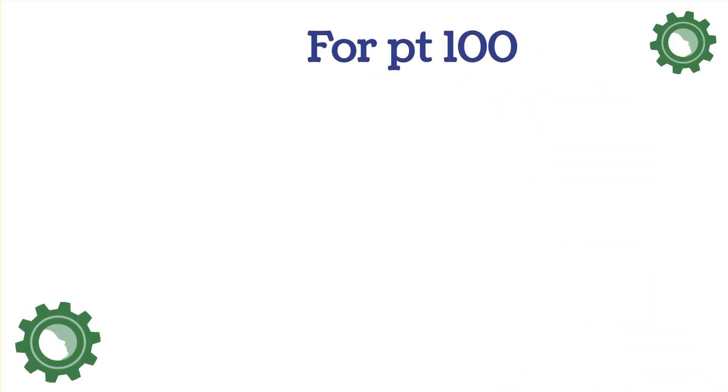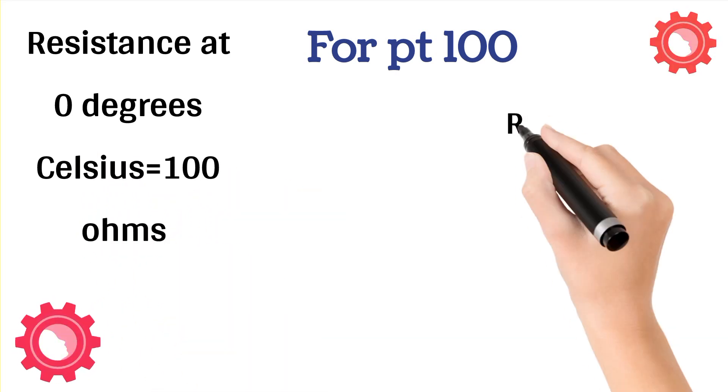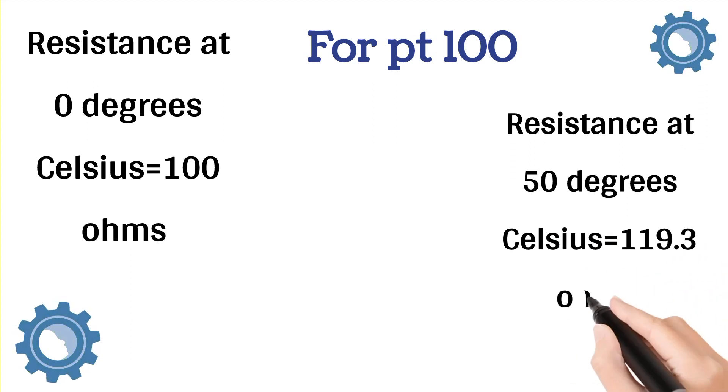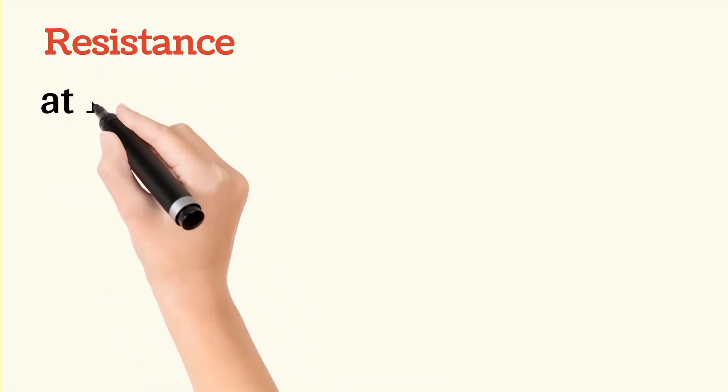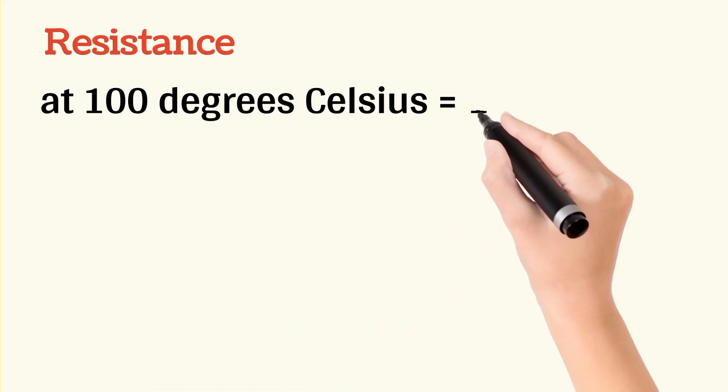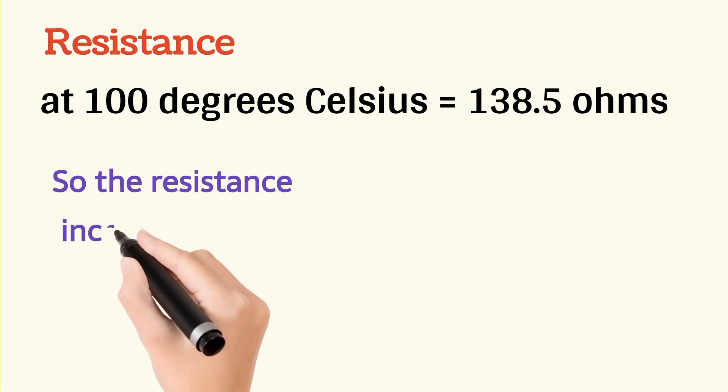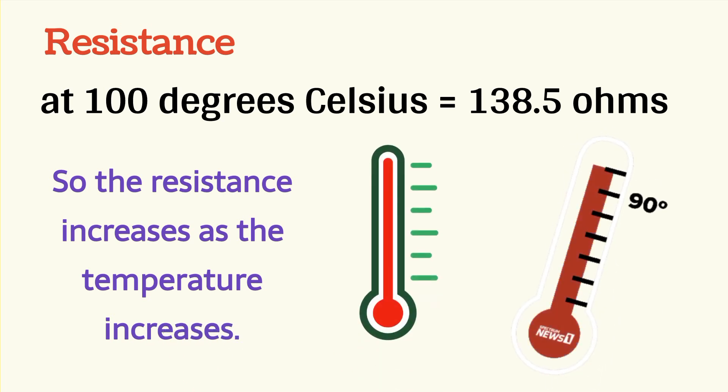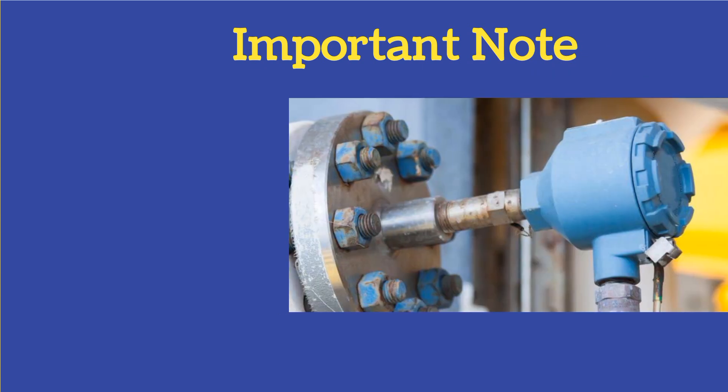For PT100 RTD, resistance at 0 degree Celsius is 100 ohms and RTD resistance at 50 degree Celsius is approximately 119 ohms. If we increase the temperature further we will find that resistance at 100 degree Celsius is approximately 138.5 ohms. So it is clear that the resistance increases as the temperature increases.